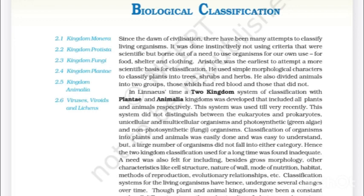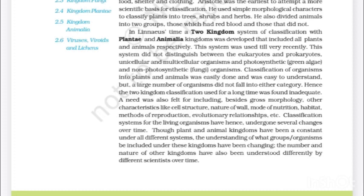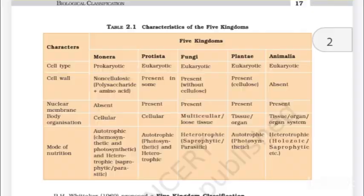Besides gross morphology, a need was also felt for including other characteristics like cell structure, nature of wall, mode of nutrition, habitat, methods of reproduction, evolutionary relationship, etc. Classification systems for living organisms have hence undergone several changes over time. Though plant and animal kingdoms have been constant under all different systems, the understanding of which groups of organisms are included under these kingdoms has been changing. The number and nature of other kingdoms have also been understood differently by different scientists over time.